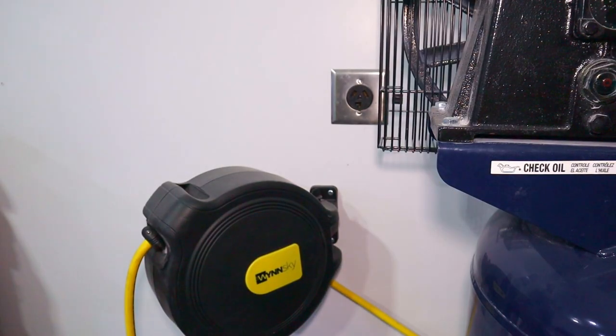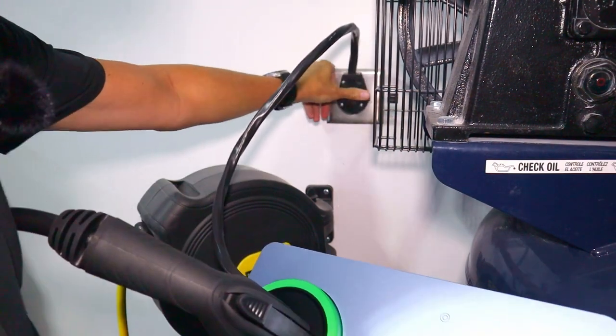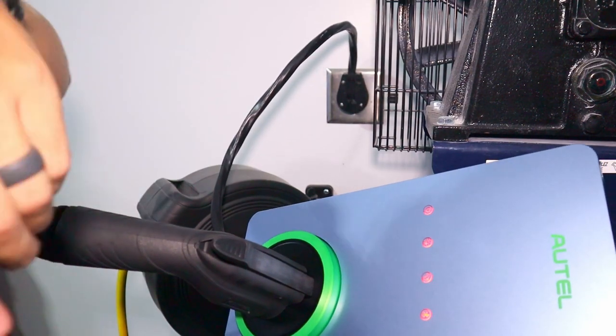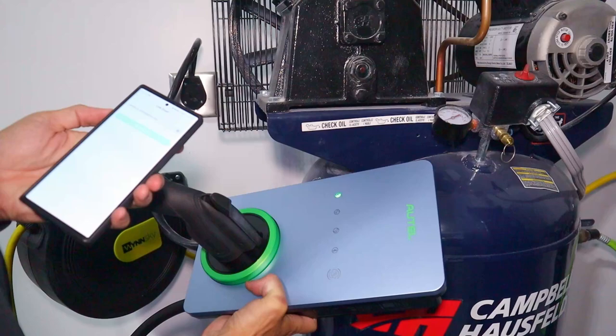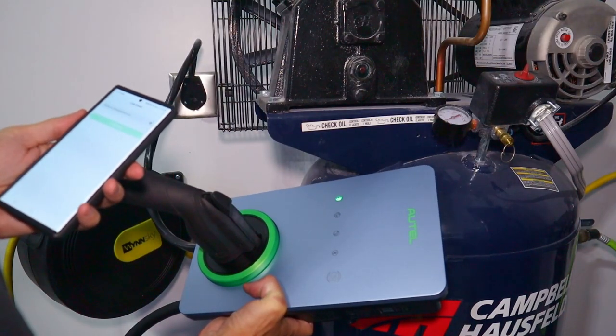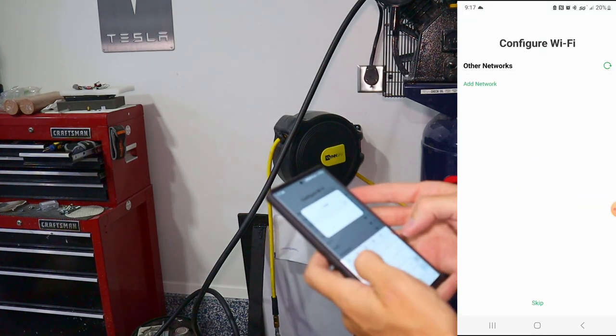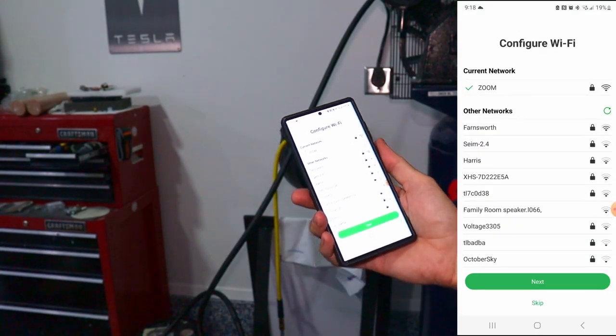We're going to use this 220 outlet here towards the back of the garage by my air compressor. So we got lights flashing here. I'm just linking the device to my phone. I'm going to add one. We linked Bluetooth. Now we're going to link Wi-Fi. Now we are linked on Wi-Fi.